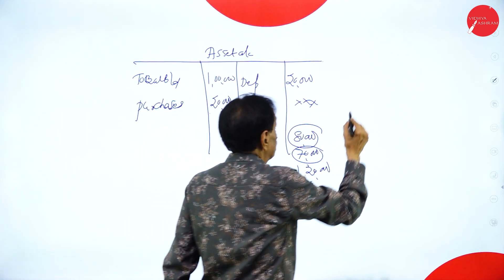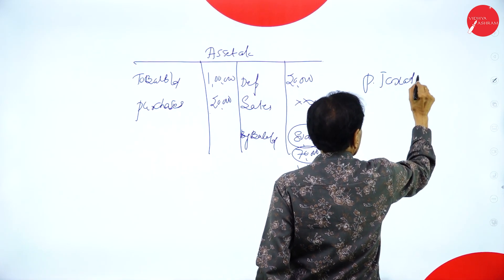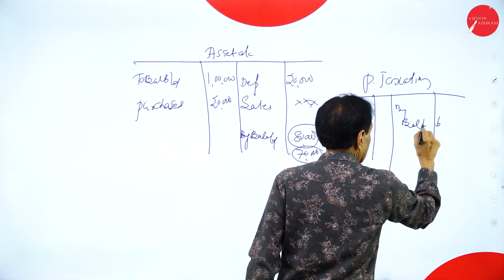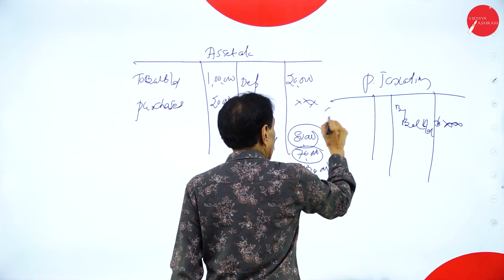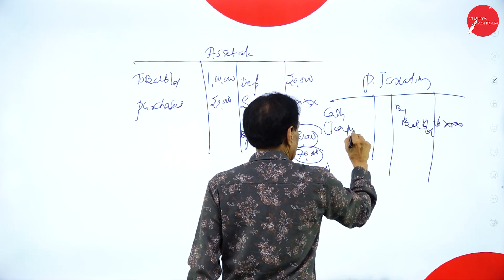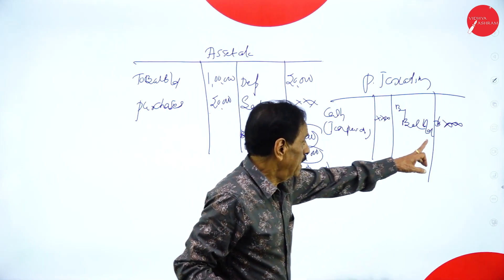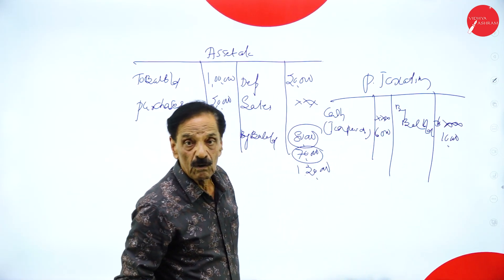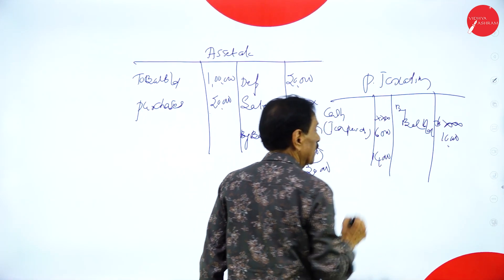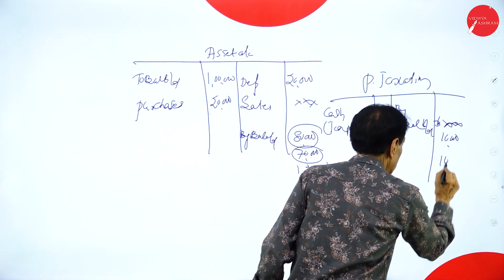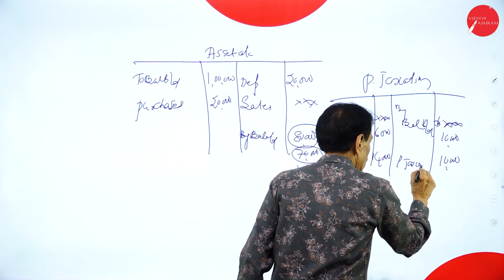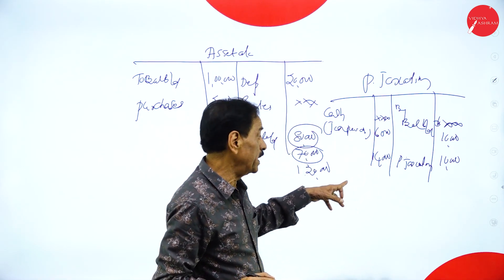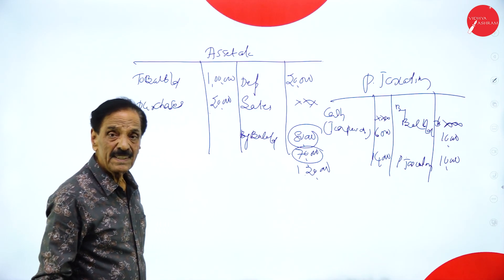For provision for taxation: assume your opening balance is 10,000 and tax paid is 6,000 — the balance left is 4,000. But if instead you have 14,000, the difference of 10,000 is the provision for taxation created. You have to remember this working note.